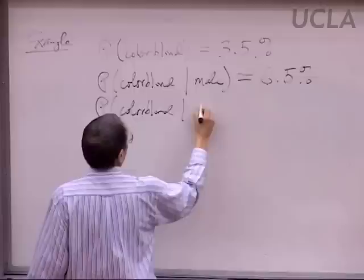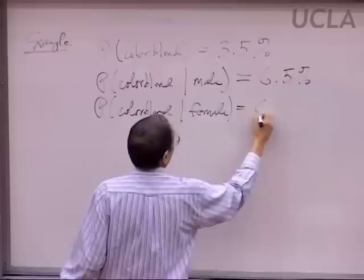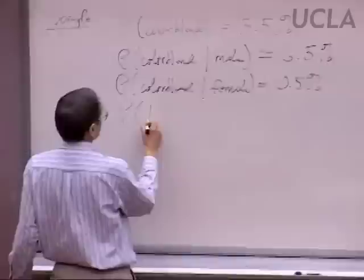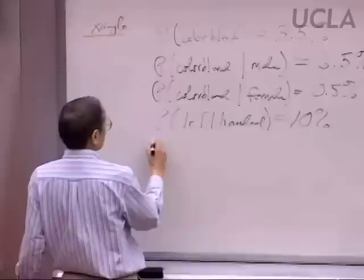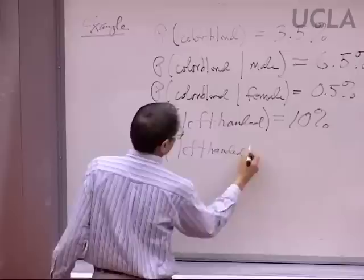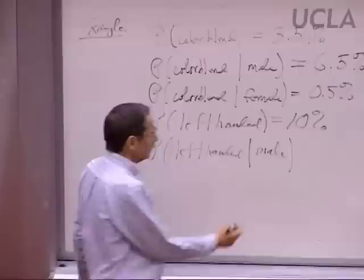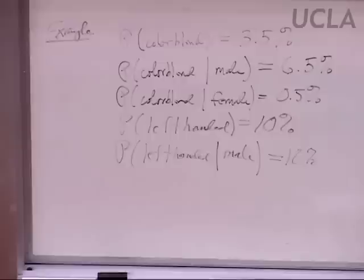But given the complement — given the event that the person chosen is female — it's apt to make a big difference. Perhaps in this population the probability of being left-handed is, say, ten percent. That's the right ballpark. But if we're given additional information, say we're told the event of being male occurred, it might make no difference whatever. The probability of being left-handed is about the same in males and females.